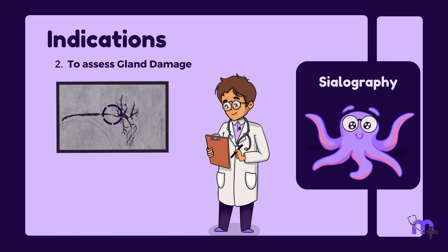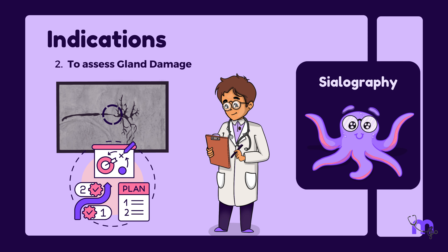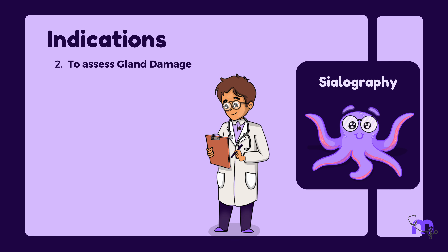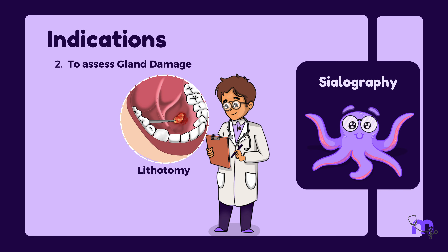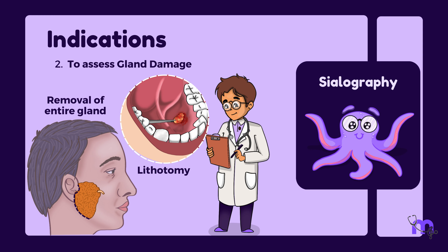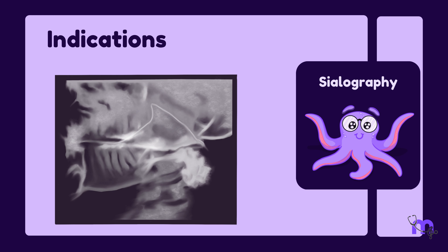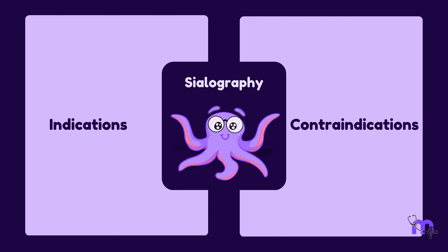Another indication is to assess gland damage. When a blockage in the duct occurs, the part of the duct and gland tissue beyond the blockage can undergo destruction due to the lack of saliva flow. Sialography helps us assess the extent of this damage, which is crucial for deciding the appropriate treatment. This could range from simply removing the stone, called lithotomy, to potentially removing the entire gland.